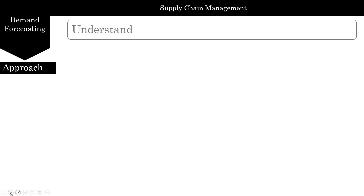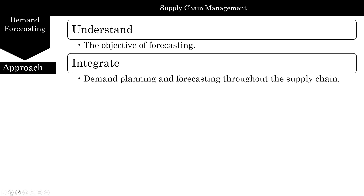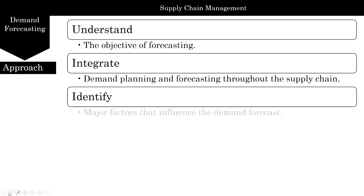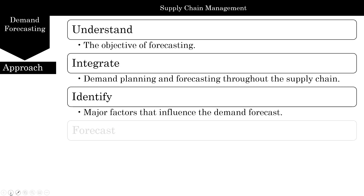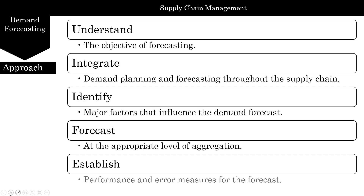The approach to demand forecasting: first, understand the objective of forecasting. Then integrate that with demand planning and forecasting throughout the supply chain. Identify the major factors that influence the demand forecast. Do the forecast at the appropriate level of aggregation. And finally, establish performance and error measures for the forecast.